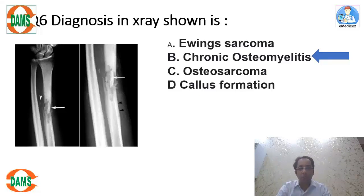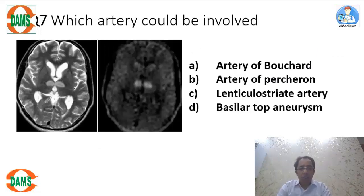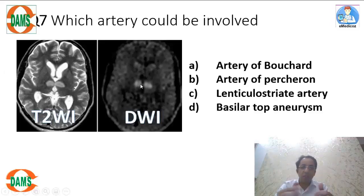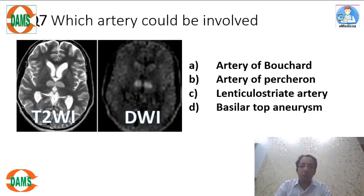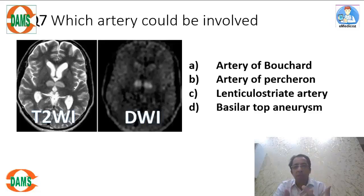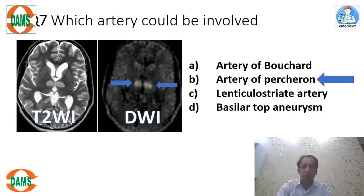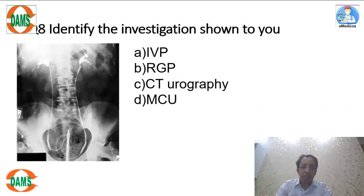In the next image, a T2-weighted MRI and a diffusion-weighted MRI show bilateral infarction in the thalamus — bilateral thalamic infarction — hyperintense on both DWI and T2. The thalamus is supplied by the posterior cerebral artery. Sometimes a variant artery called the artery of Percheron arises from the PCA and supplies both thalami. If the artery of Percheron is blocked, you will have hypersomnia and bilateral thalamic infarct, as seen in this picture. This is artery of Percheron territory infarct.